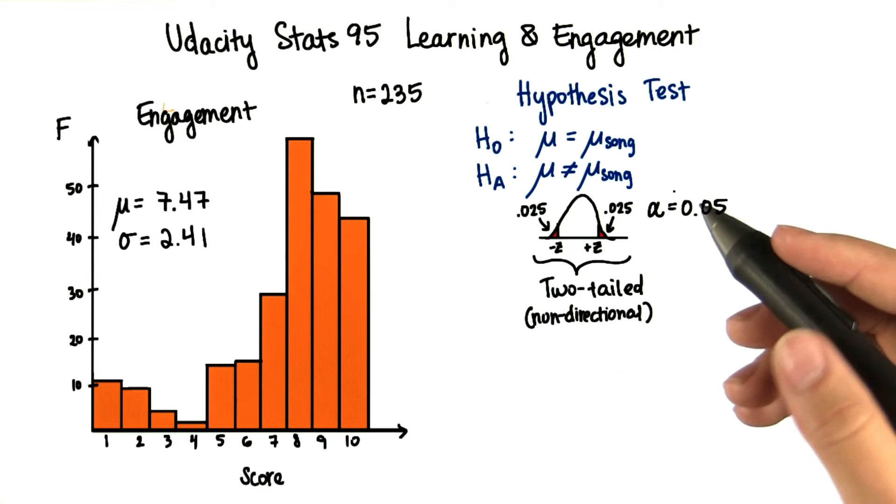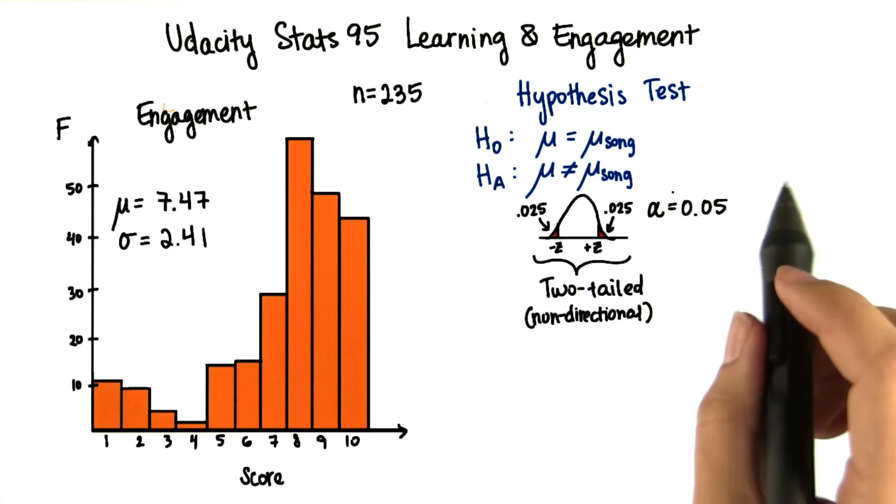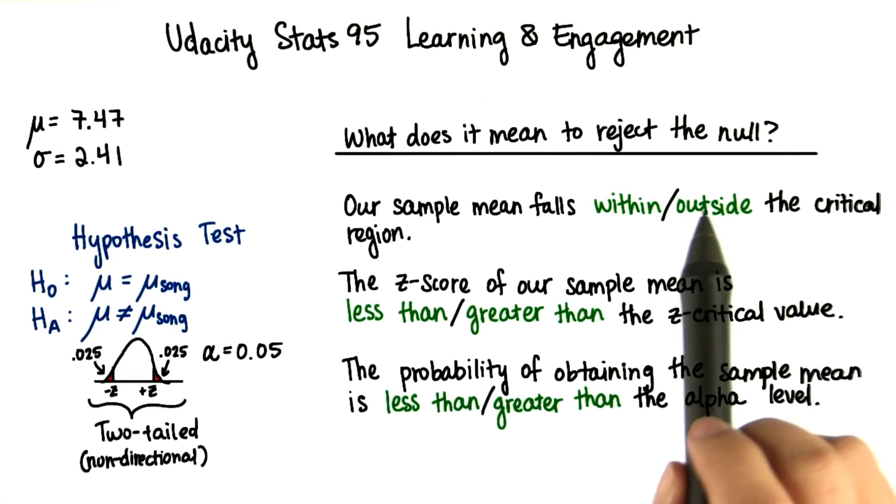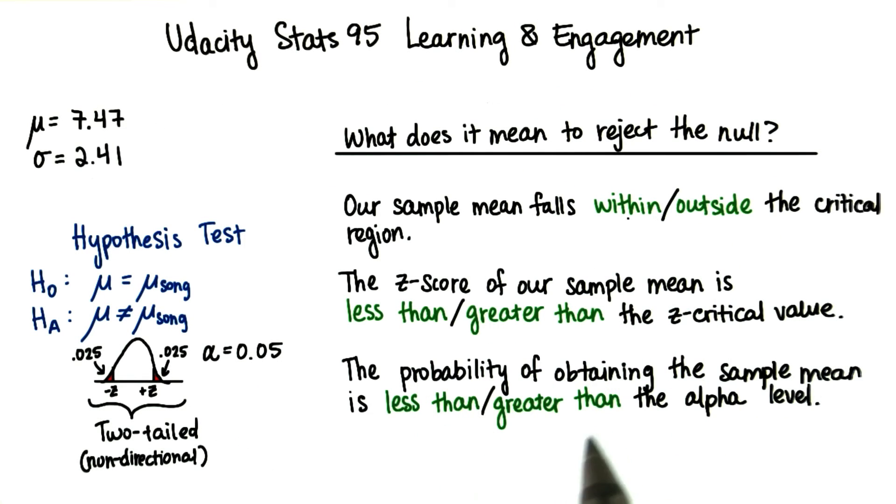Before we get cracking, let's make sure you understand what it means to reject the null. Select the appropriate word in each sentence so that they all describe what it means to reject the null. One point of clarification: when figuring out this second one, just ignore negatives. Let's say the z critical value is positive. Then how big should the z-score of the sample mean be to reject the null?